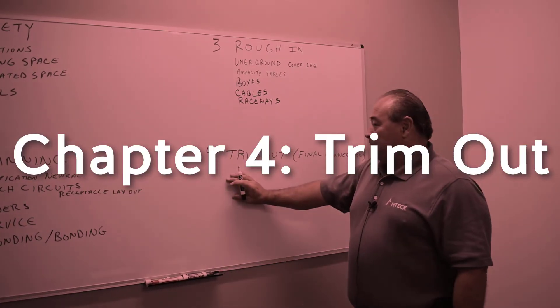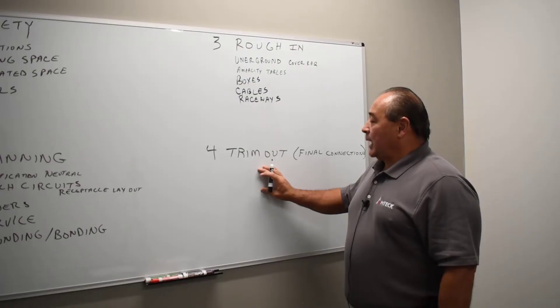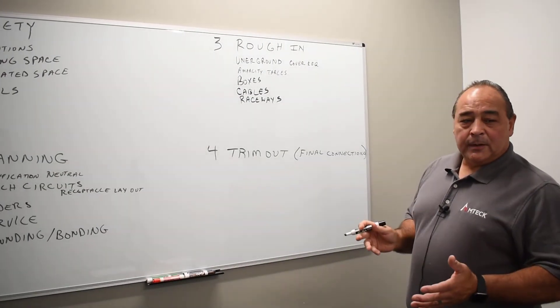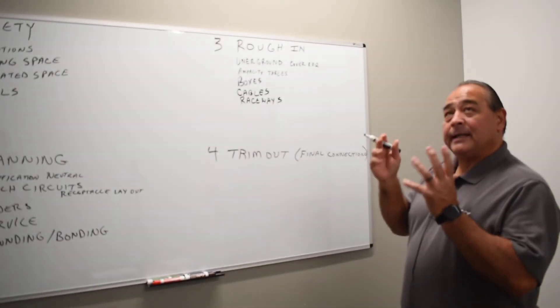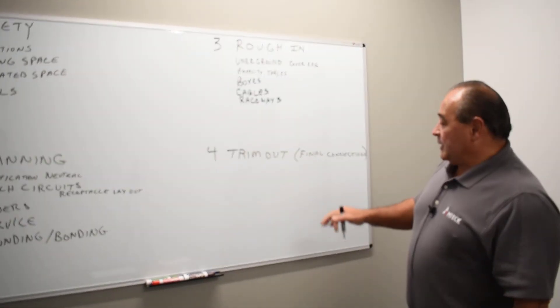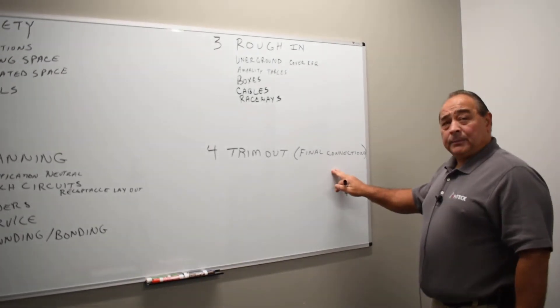Now we're going to get into Chapter 4, which we call Trim-Out, and all the different pieces and parts at the end of the job. When the drywall is on, the paint's on, you're putting in the receptacles, switches, you're putting in the lights in the ceiling, you're making the final connections to all the different parts and pieces like the panels, transformers, HVAC equipment, appliances. Chapter 4.